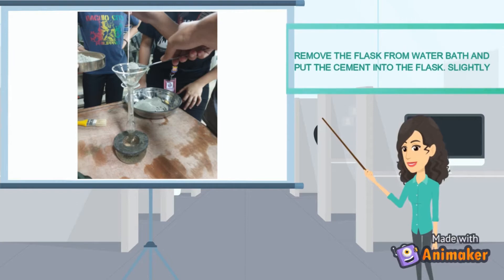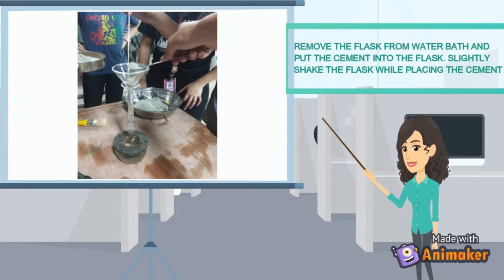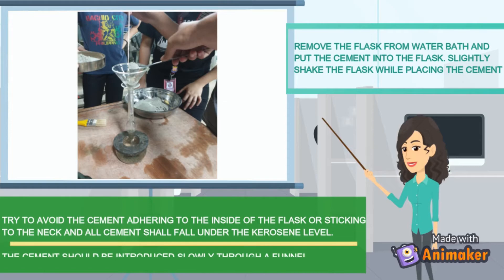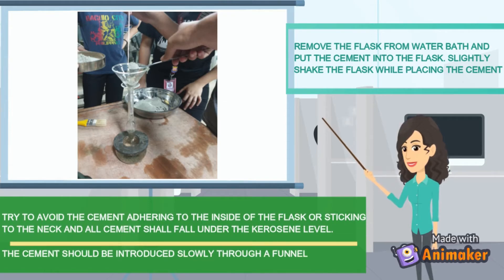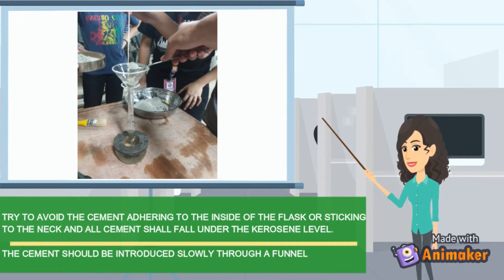Remove the flask from the water bath and put the cement into the flask. Slightly shake the flask while placing the cement. Try to avoid the cement adhering to the inside of the flask or sticking to the neck and all cement shall fall under the kerosene level. The cement should be introduced slowly through a funnel.